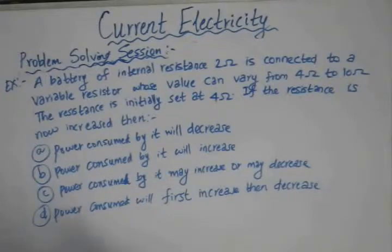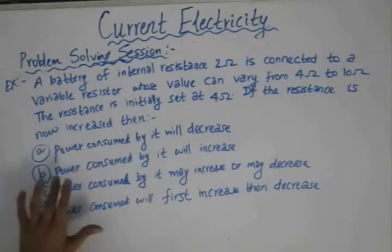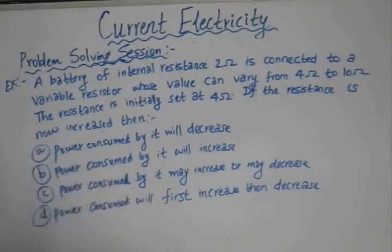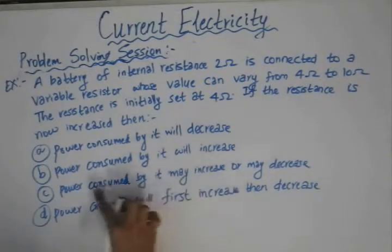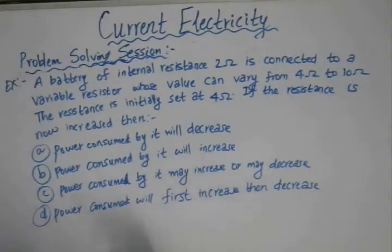The resistance is initially set at 4 ohm. If the resistance is now increased, the options available to us are: power consumed by that resistance will decrease; power consumed by the resistance will increase; power consumed by it may increase or it may decrease; or power consumed will first increase and then decrease.